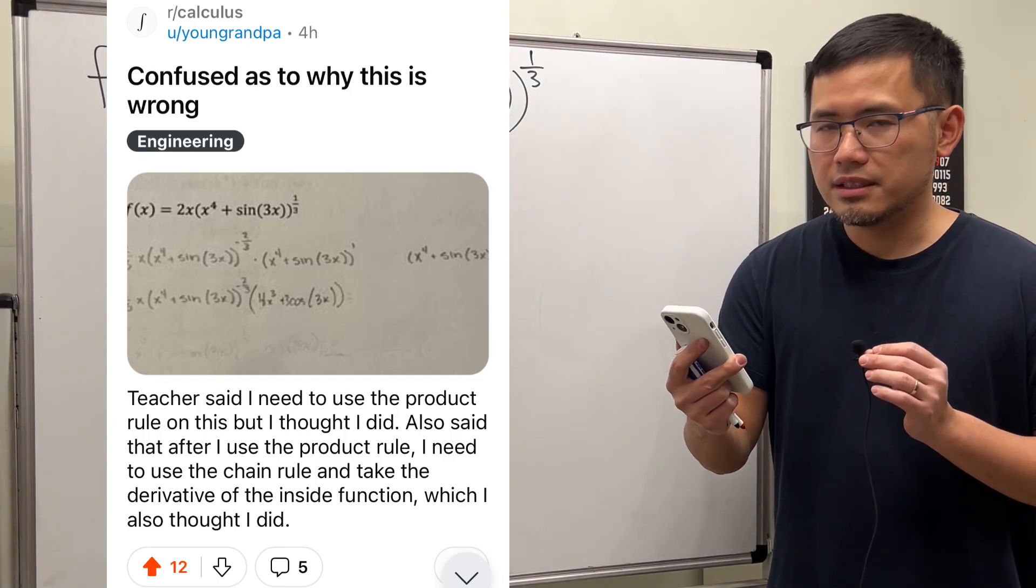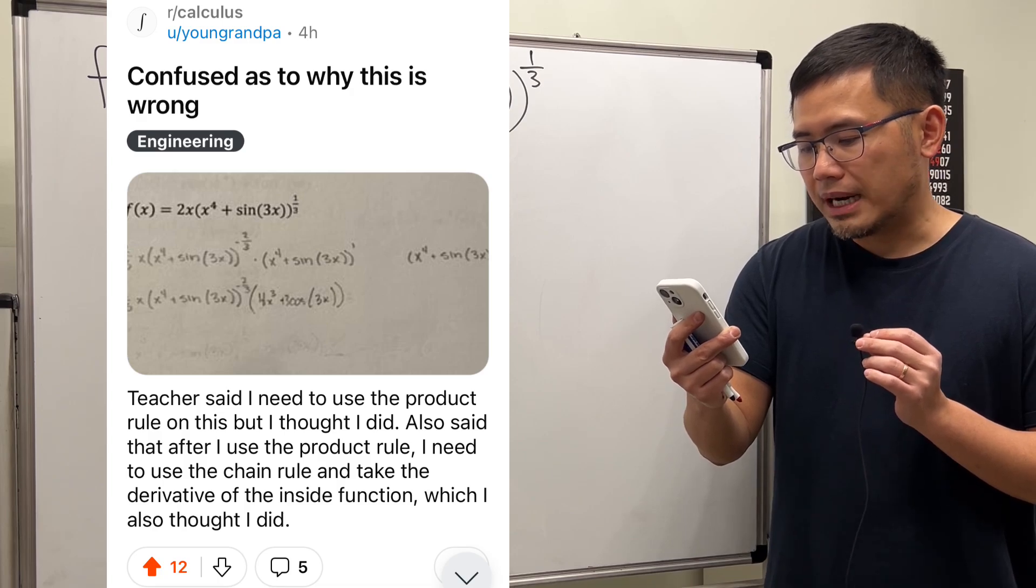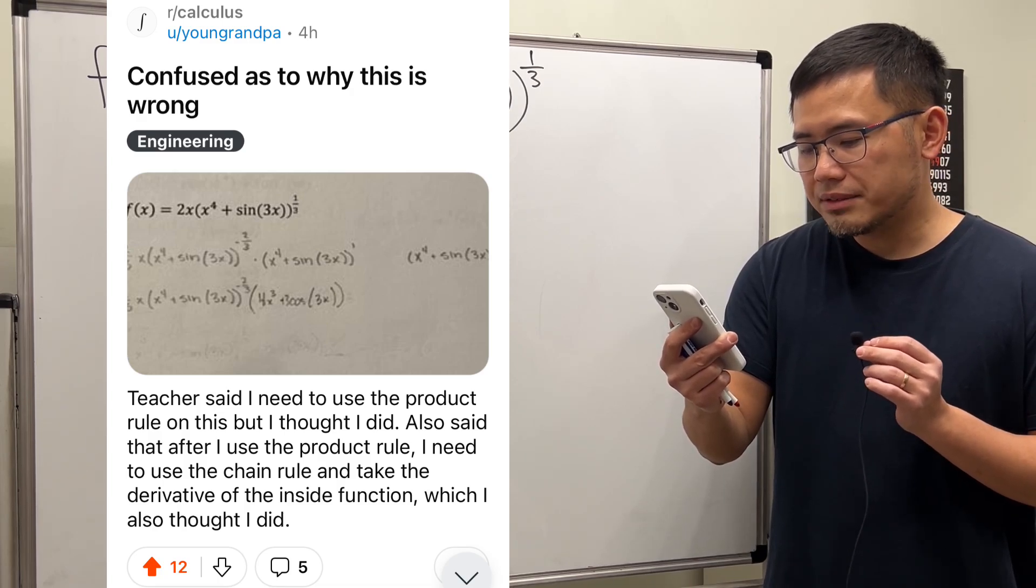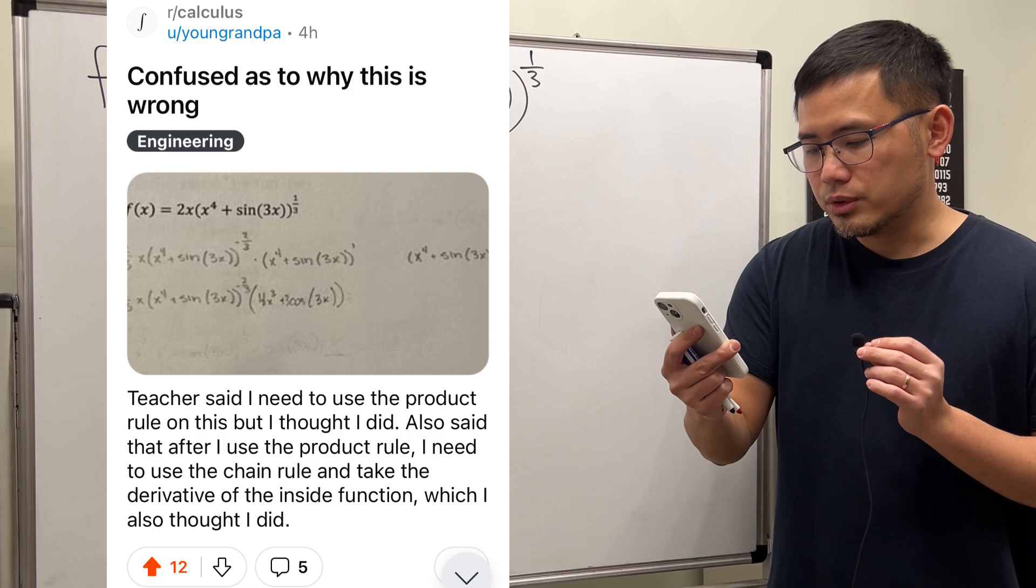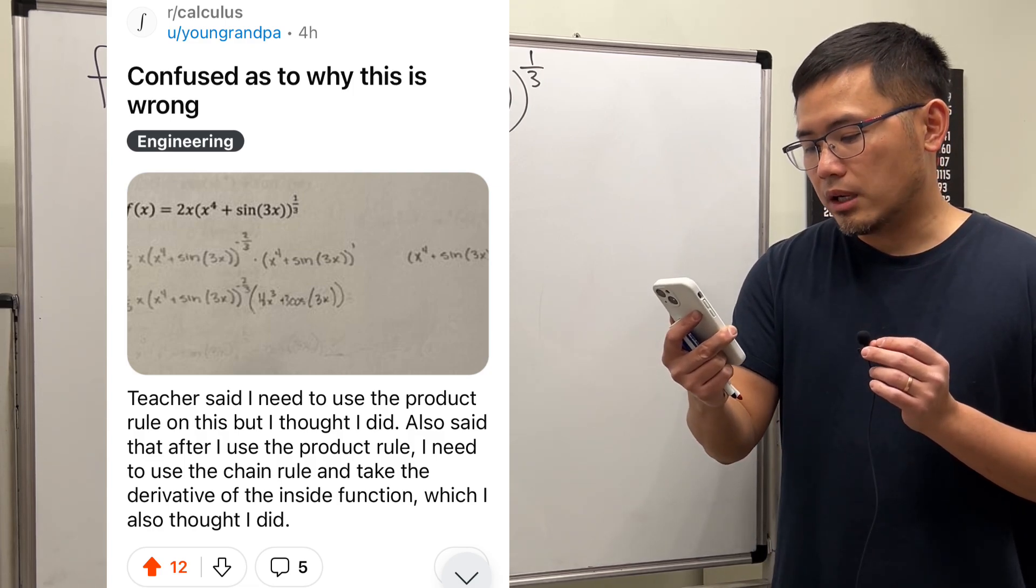Confused as to why this is wrong. Teacher said I need to use the product rule on this, but I thought I did. Also said after I use the product rule, I need to use the chain rule and take the derivative of the inside function, which I also thought I did.